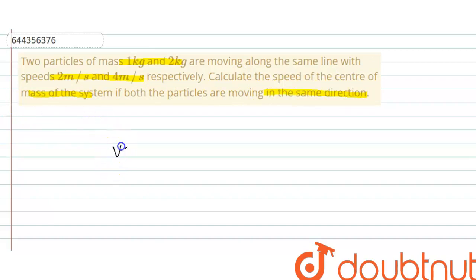Velocity of center of mass equals m1 v1 plus m2 v2 divided by m1 plus m2.